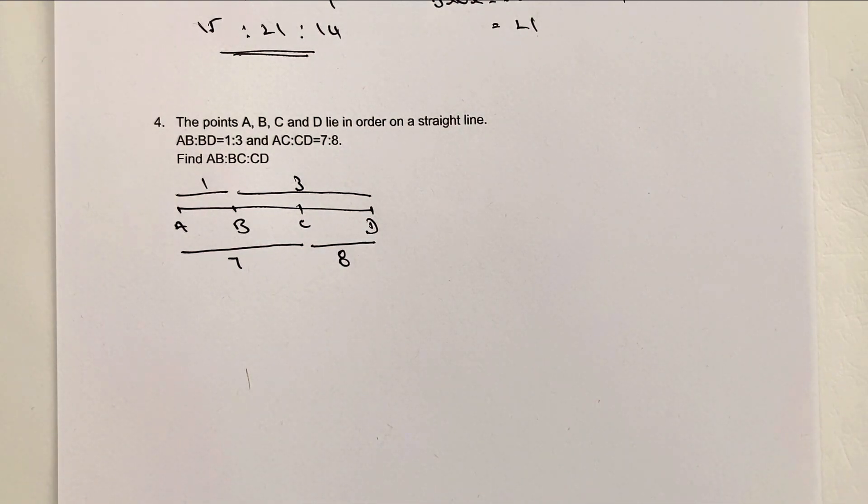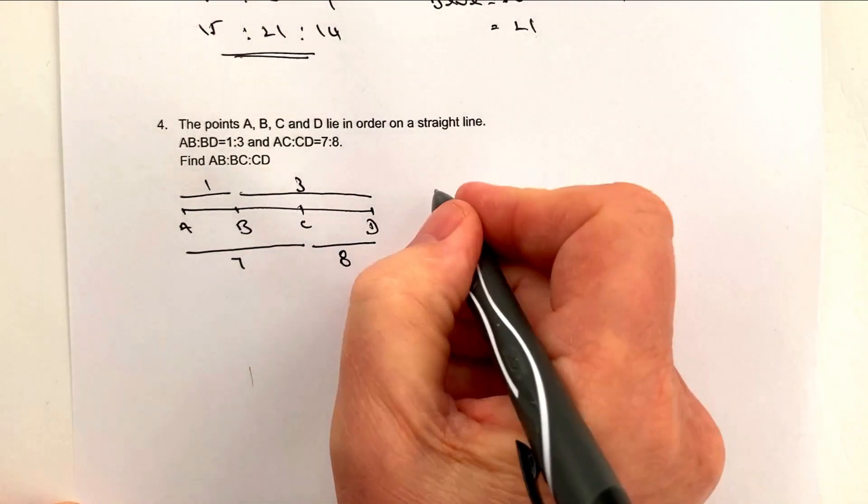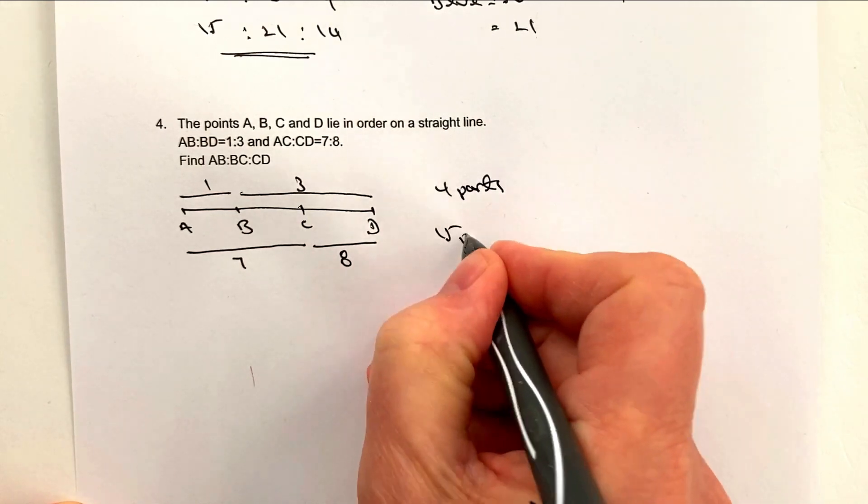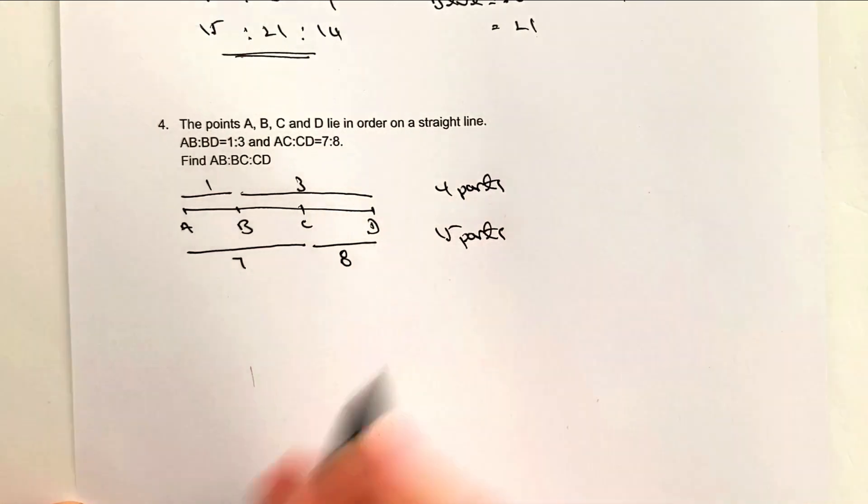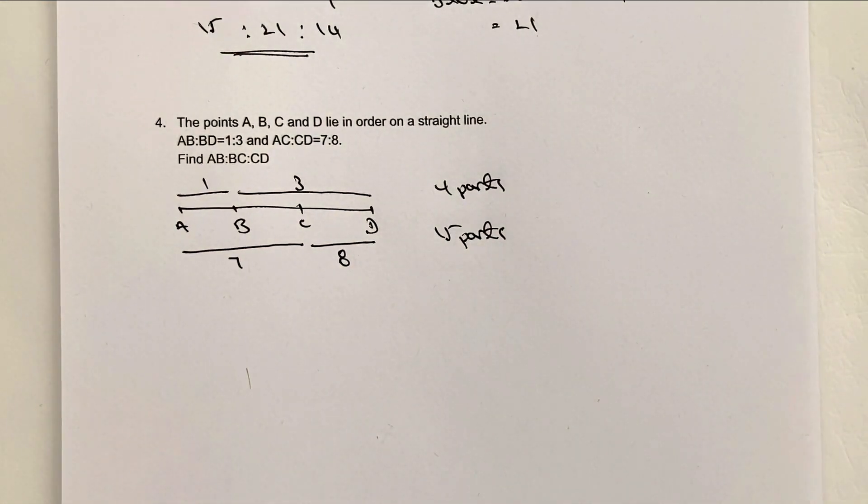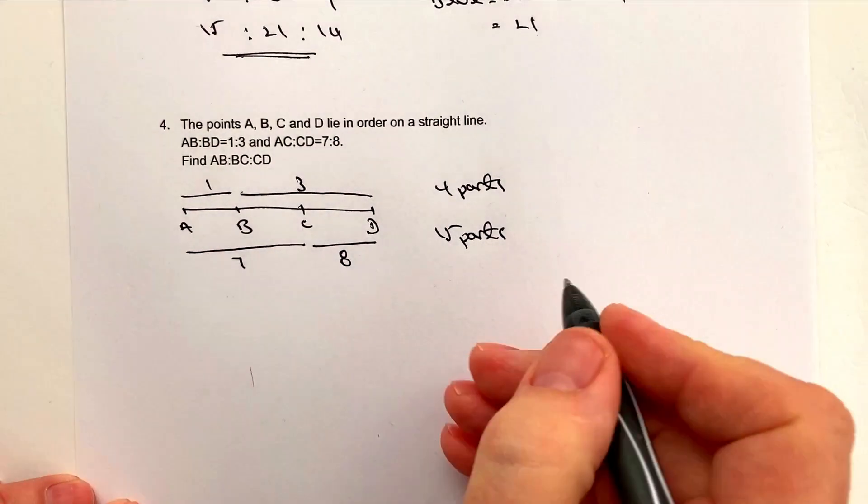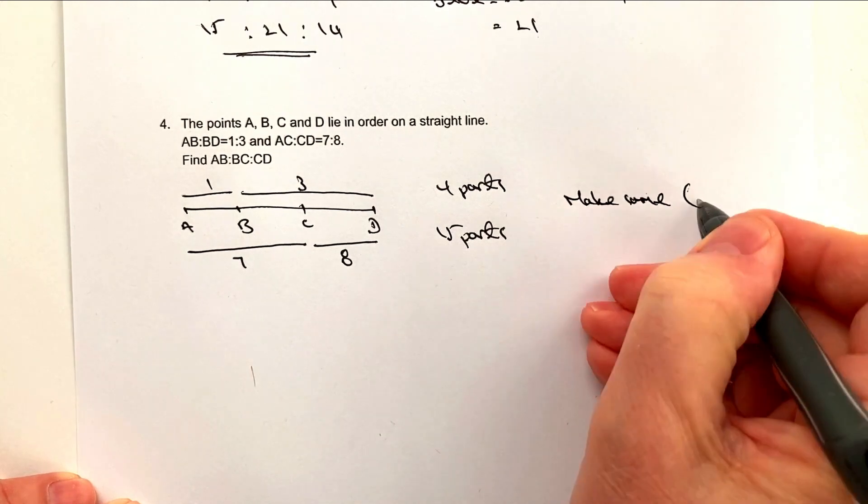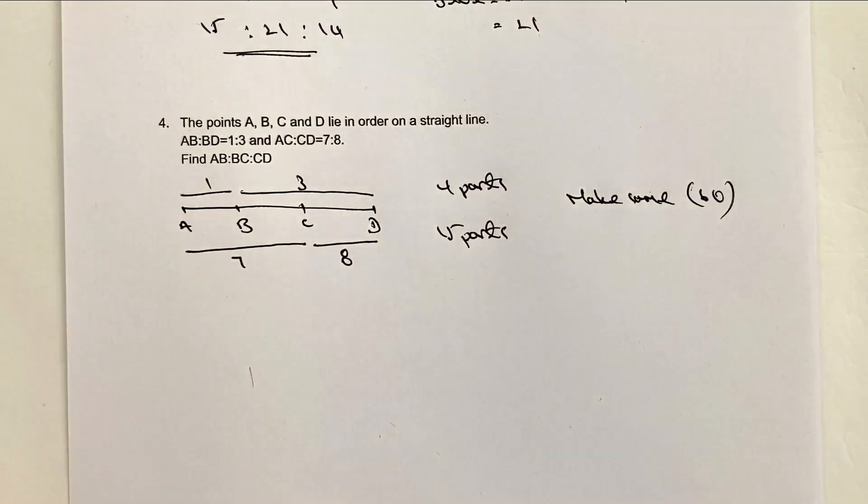So again we've got a similar problem to the one that we had in question number three, where at the top we have 4 parts and at the bottom we have 15 parts. Well we really do need to make the number of parts the same for the top of the line and the bottom of the line.